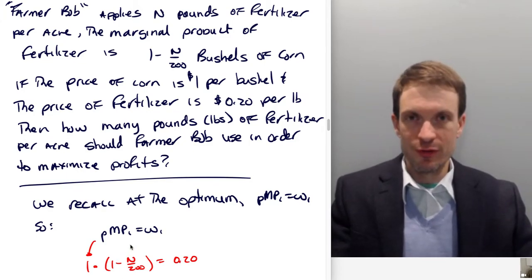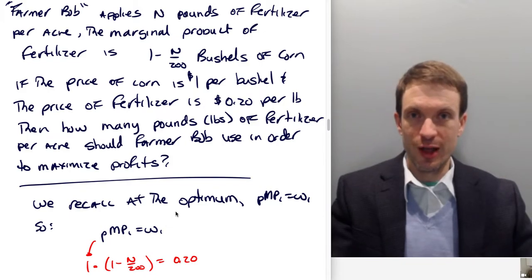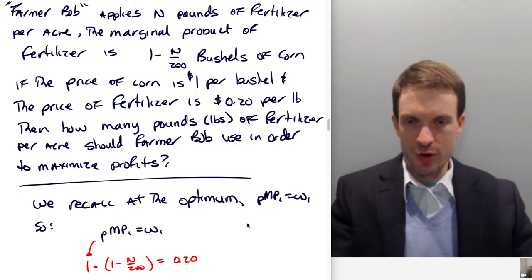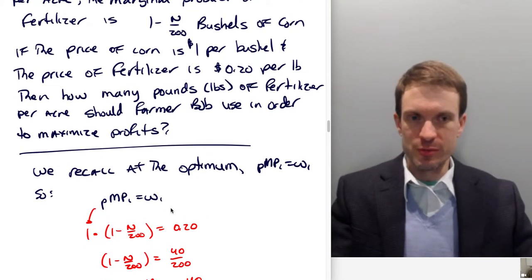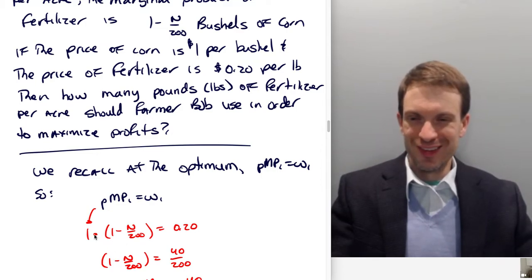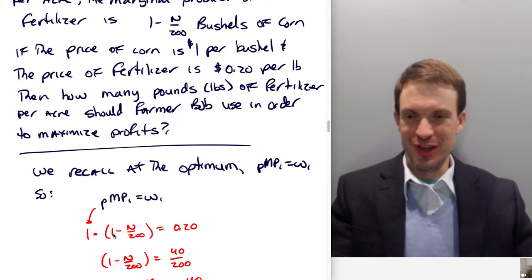And the information we've been given for the marginal product. From that point, it's actually just algebra, right? I mean, you have to sort of make the realization of the calculus concept that got us to here in terms of supporting the optimization, but in terms of working the problem, it comes down to just algebra.